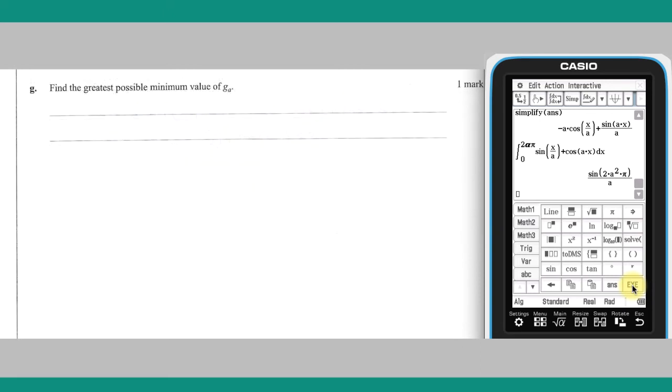Part G: One way to think about the minimum value of g_a is to consider g_a as the sum of two trigonometric waves. As a gets large, the period of the sine x over a wave increases while the period of the cos ax wave decreases. These two waves superimposed will look something like this.